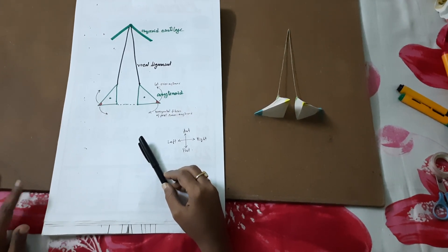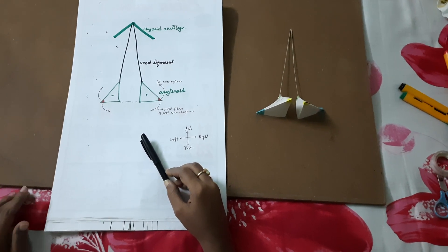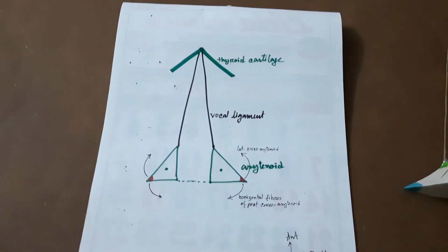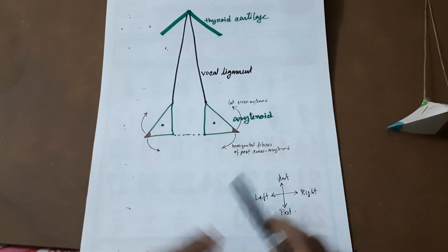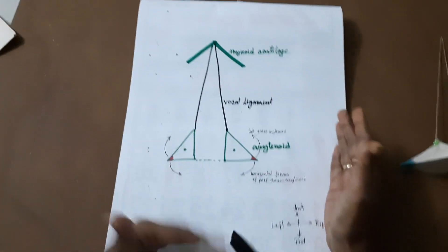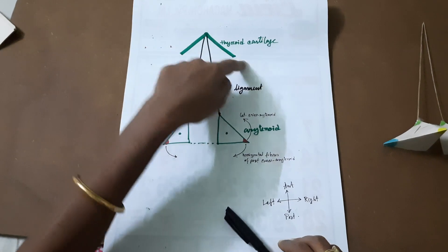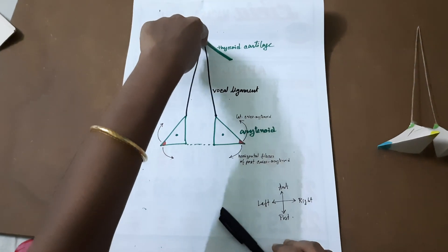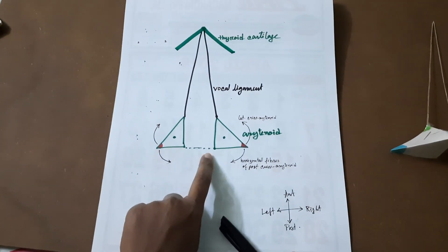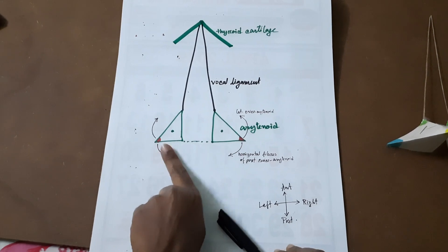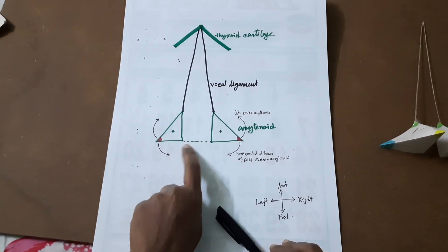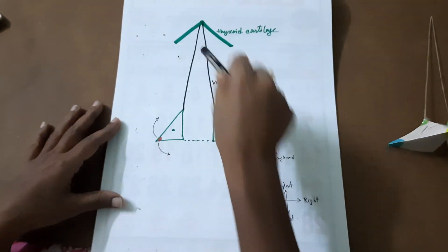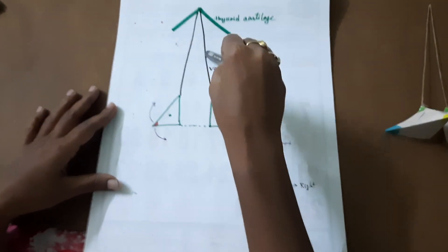It is completely devoid of submucous cord. This space is bounded anteriorly, posteriorly, right, and left. Anteriorly it is the thyroid cartilage and the thyroid angle, so anteriorly bounded by the thyroid angle. Posteriorly, this dotted line is present in between the two arytenoid cartilages, and this is the inter-arytenoid fold.